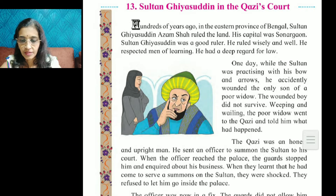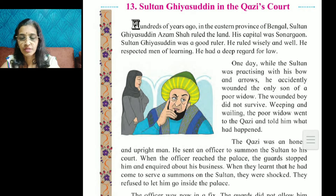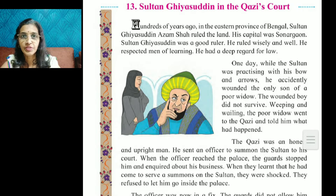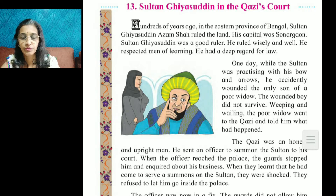One day, while the Sultan was practicing with his bow and arrows, he accidentally wounded the only son of a poor widow.